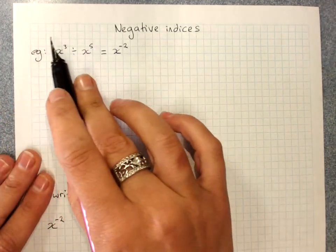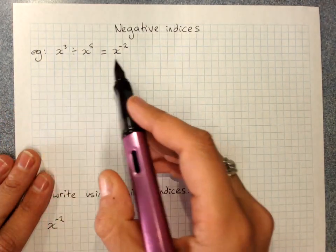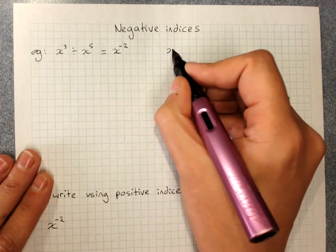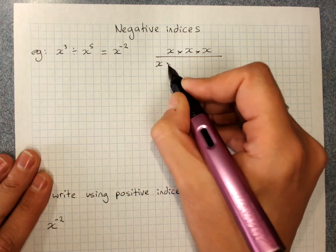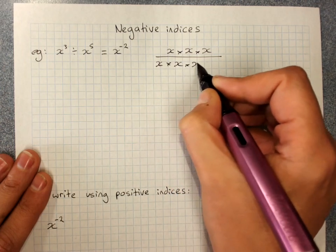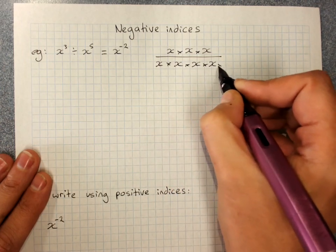That's great. But if I do this in expanded form, x to the 3 divided by x to the 5, because we always do a division as a fraction unless there's a very good reason not to.